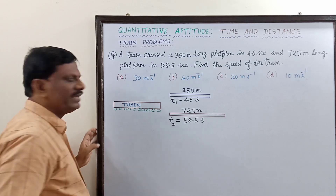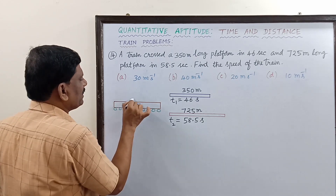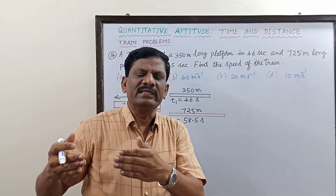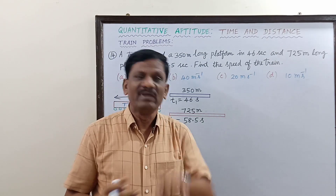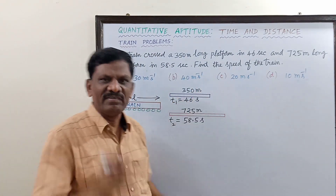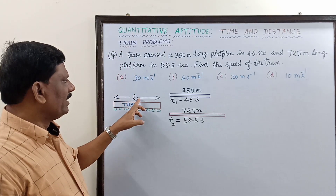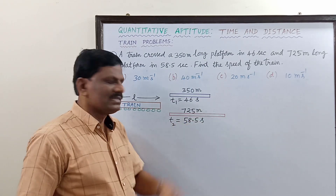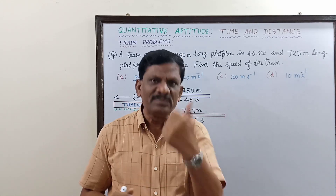The length of the train is taken as L. When the train crosses the first platform of 350 meters, the total distance traveled is L plus 350 meters. When crossing the second platform of 725 meters, the total distance traveled is L plus 725 meters. The train crosses both platforms at the same speed.